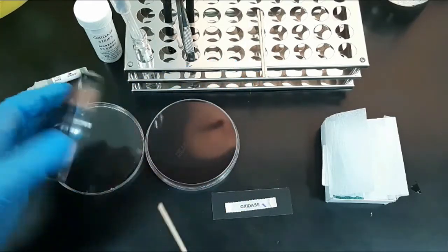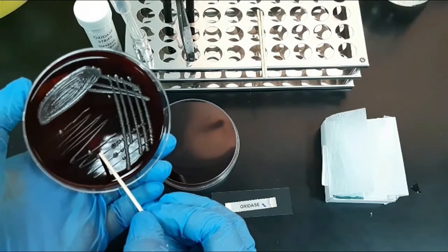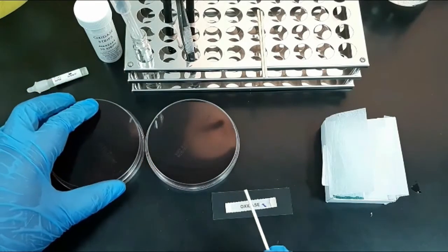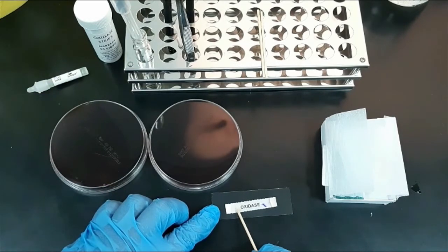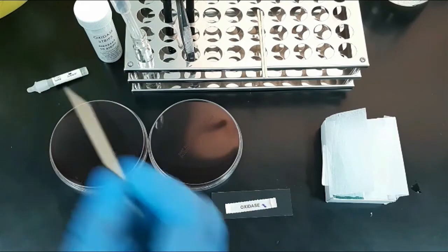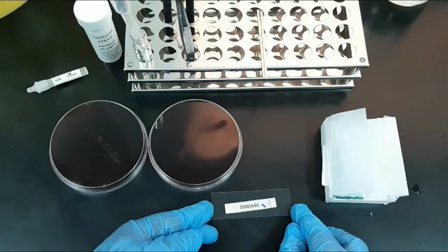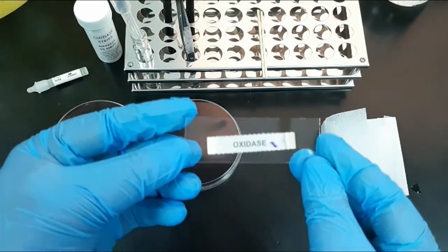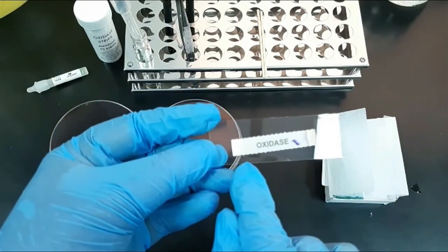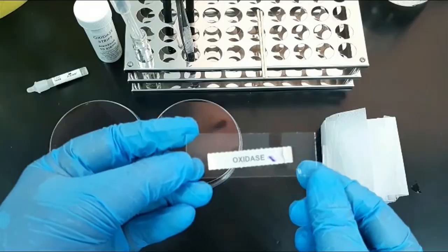Now repeat the procedure using an oxidase-negative control bacteria on the other side of the paper. Pick the organism from the culture media and rub it as before. You can notice there is no formation of purple color in the rubbed area. Now you can compare the positive and negative oxidase reactions.